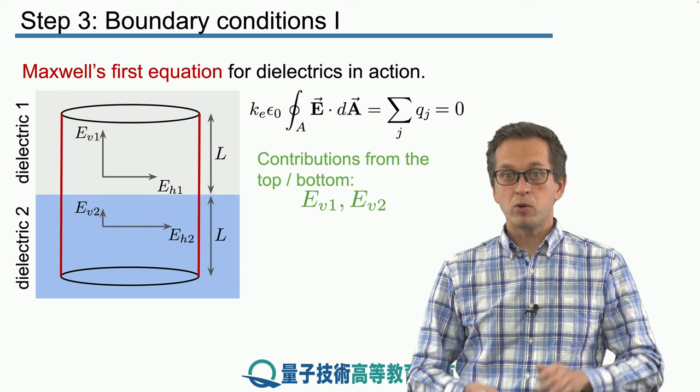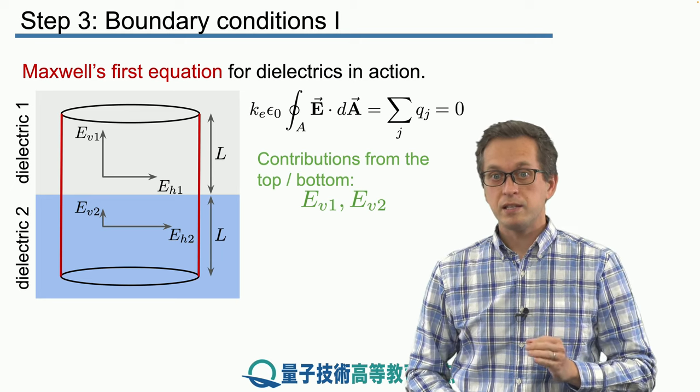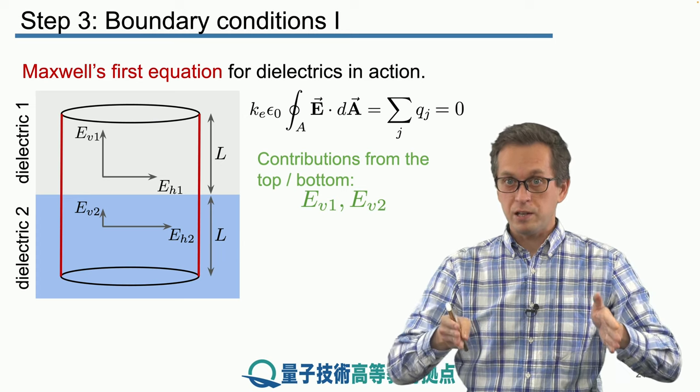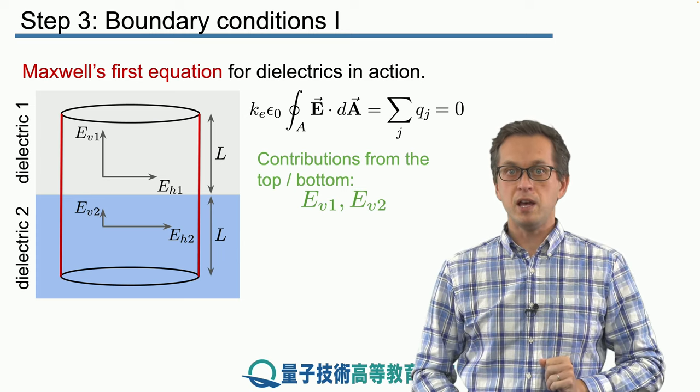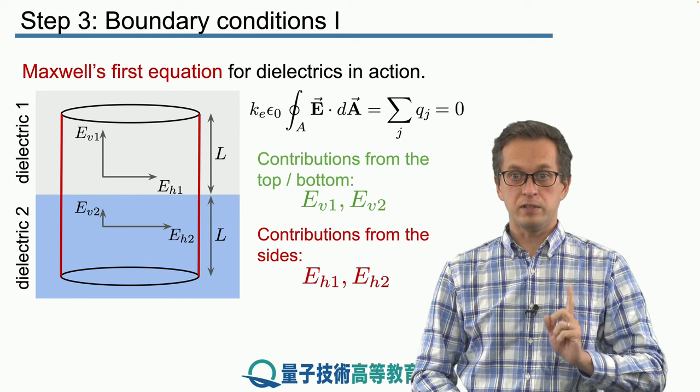Similarly, if we consider now the side of the cylinder, we can see that eV1 is parallel to the side of the cylinder, meaning it's perpendicular to dA.